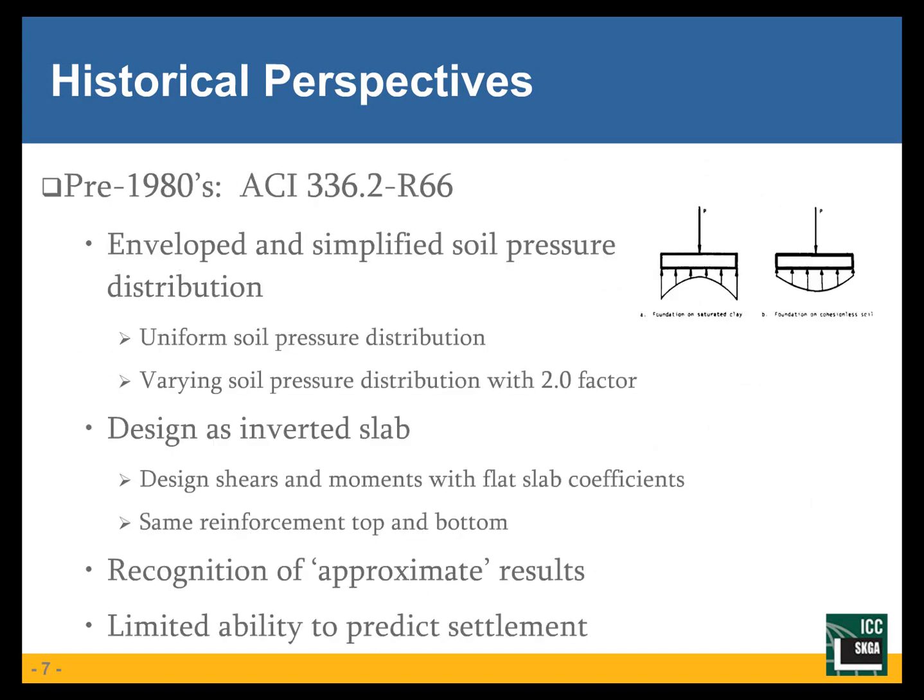I'll break the discussion into two separate time periods: pre-1980s and post-1980s. The pre-1980s approach is described in the ACI 336 report from 1966, which describes a couple of interesting things. One is that they used an envelope and simplified soil pressure distribution to design a MAP foundation. Many times they started with a uniform soil pressure distribution and then applied a varying soil pressure distribution with a 2.0 factor — meaning, for example, the bearing pressure at the middle of the mat would be half of the bearing pressure at the perimeter, or vice versa depending on the soil type.